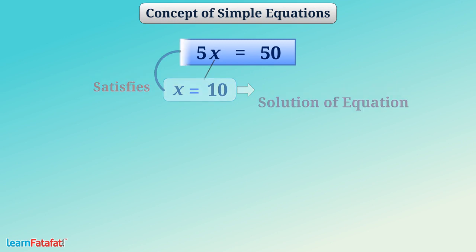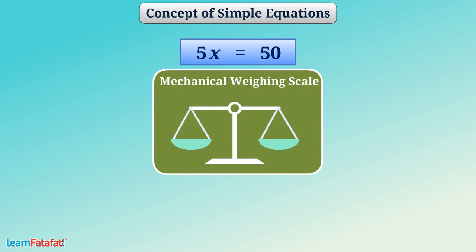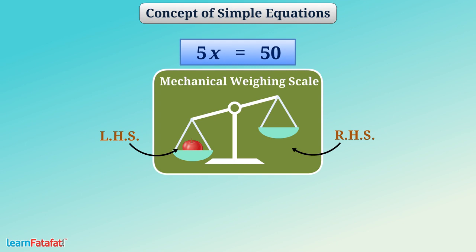Consider the equation. We can think of the equation as mechanical weighing scale which has two sides, the left-hand side and the right-hand side which can be written as LHS and RHS respectively. In the weighing scale, if we put some weight on LHS, then we have to put equal weight on RHS as well to bring it in a balanced state.